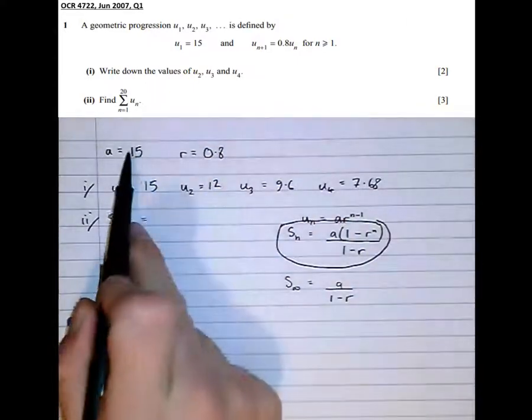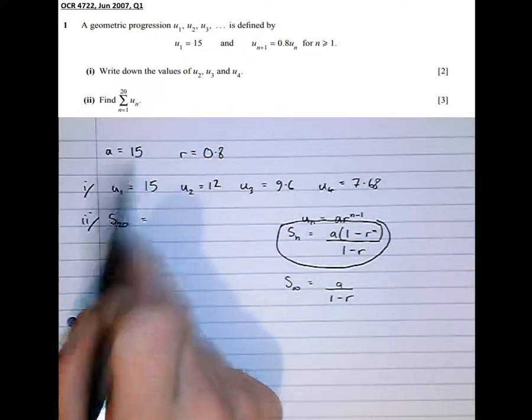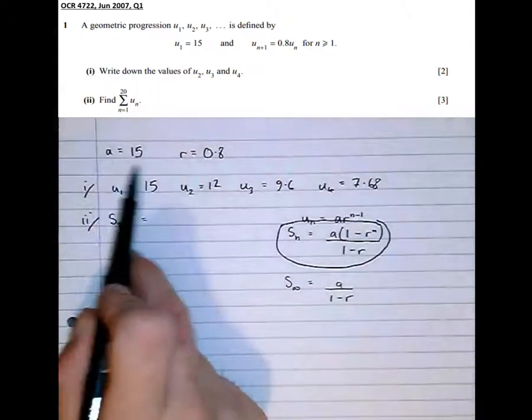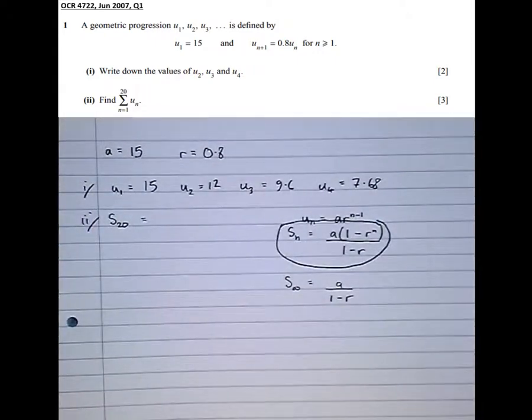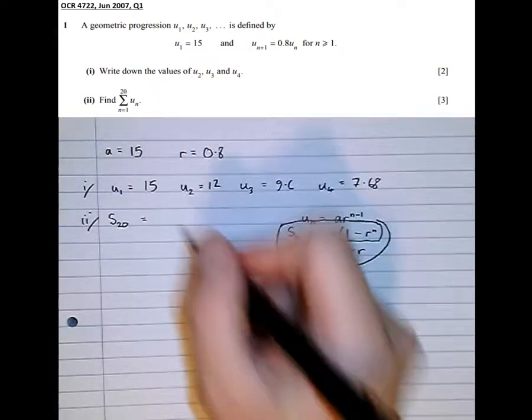But because we've written down all the initial information before, a is 15 and r equals 0.8, this makes this question significantly easier.